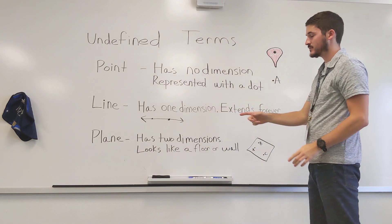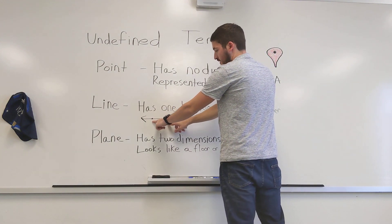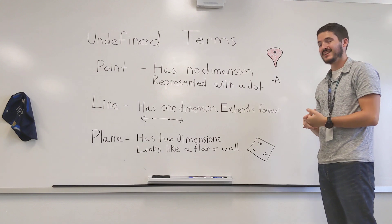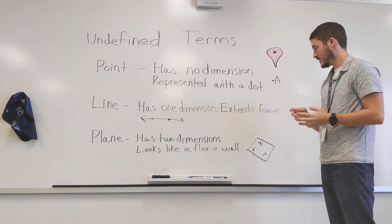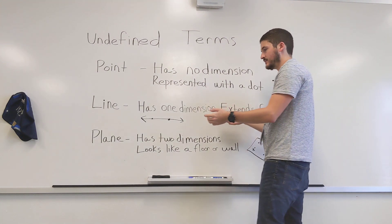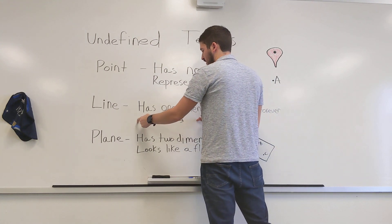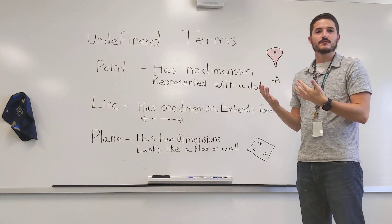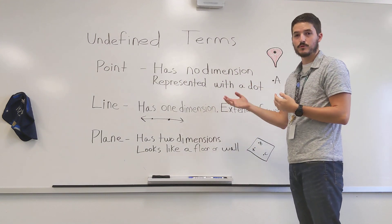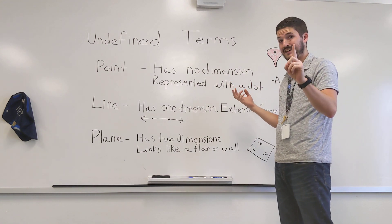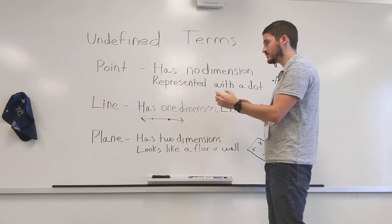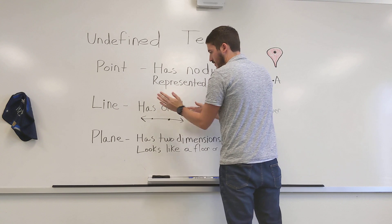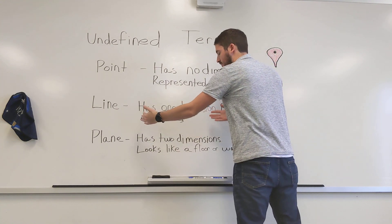Then we move down and talk about lines. If we take two points and connect them, we get what's called a line. A line has one dimension and extends forever and ever. That's what these arrows mean — it's extending forever in both directions, because you can't physically draw that. We draw those arrows, and that's going to be important later when we talk about line segments and rays, which look similar to lines but don't always have arrows on both sides.